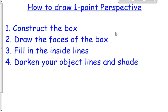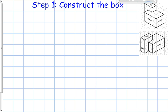Today we're going to go through a quick tutorial on how to draw one point perspective sketches. The major steps are: construct the box, draw the faces of the box, fill in the inside lines, and then darken your object lines and shade.